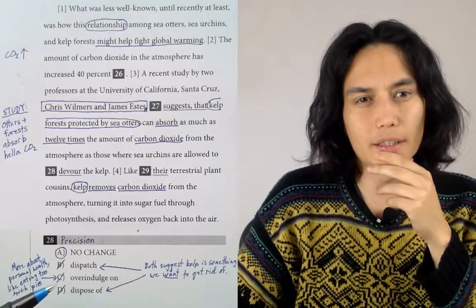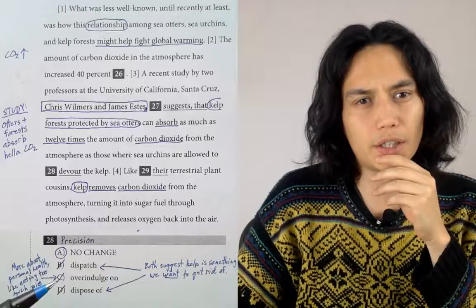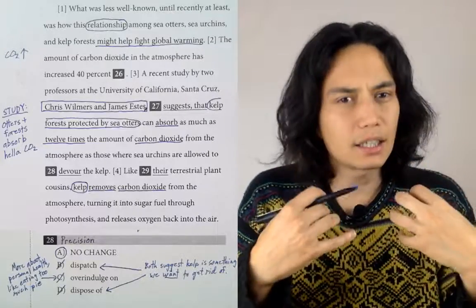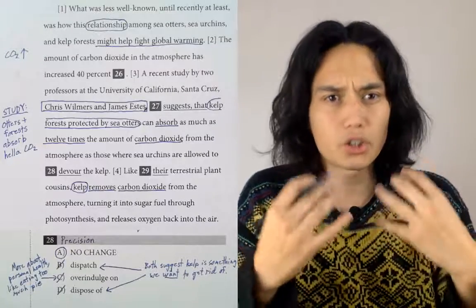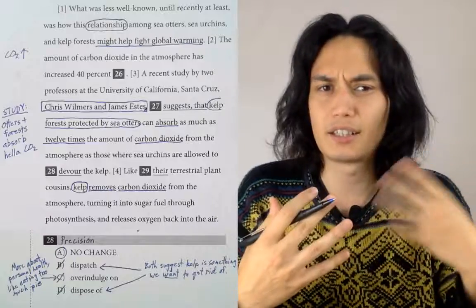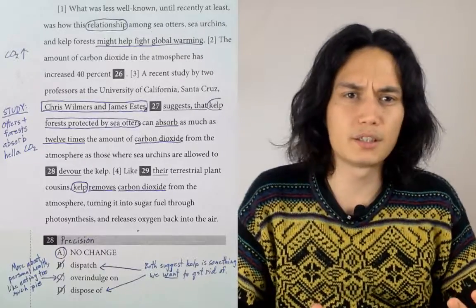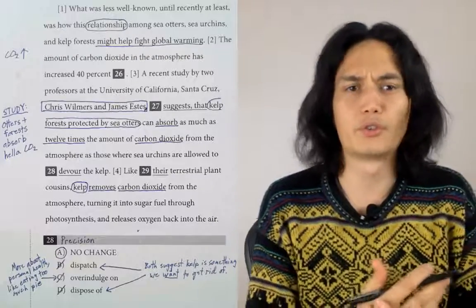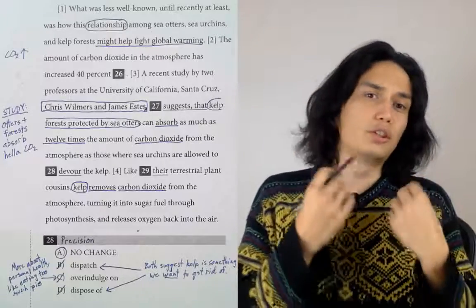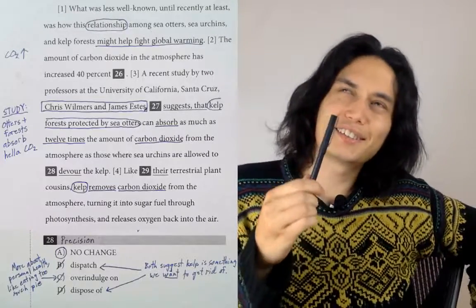The elite academics that the SAT loves use overindulge on to describe someone eating or engaging in some luxury too much. You overindulge on pie. You overindulge by eating too much dessert, by eating too big a meal. You can also talk about it in the context of movies, or like you should be working, but instead you're overindulging on stupid gossip articles or YouTube videos. You're procrastinating.